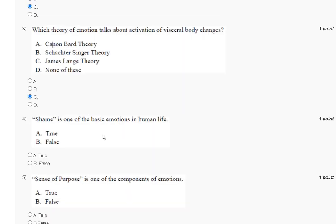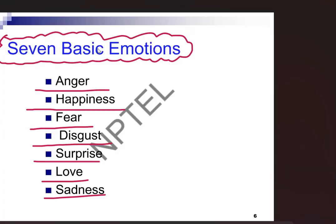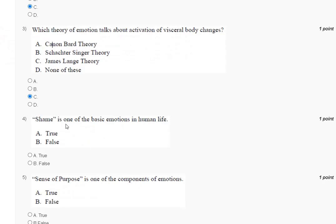Question number four: 'same' is one of the basic emotions of human life. The explanation is here. The seven basic emotions are: anger, happiness, fear, disgust, surprise, love, and sadness — not 'same.' So the correct answer to question number four is option number B.